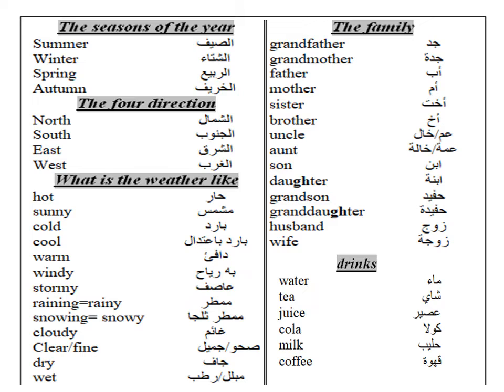The main four directions: North, South, East, West. Weather: Hot, Sunny, Cold, Cool, Warm, Windy, Stormy, Raining, Rainy.